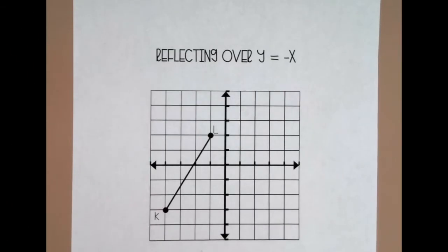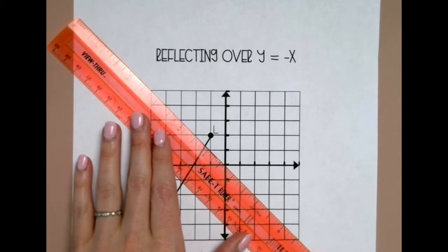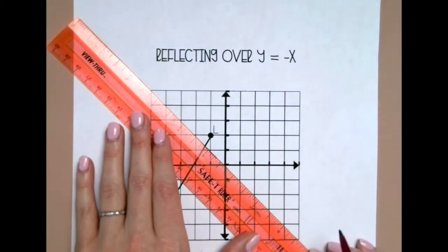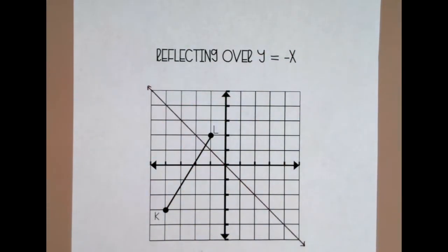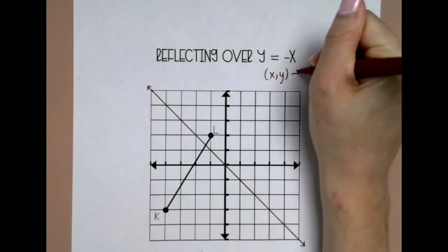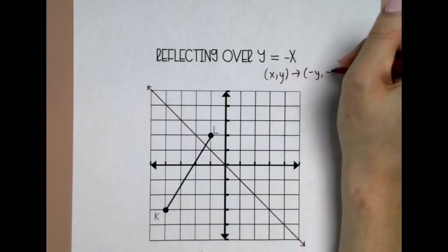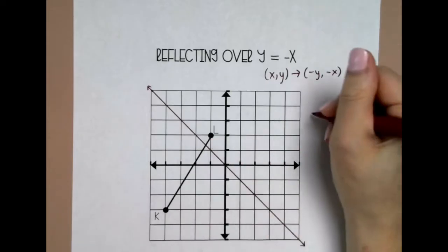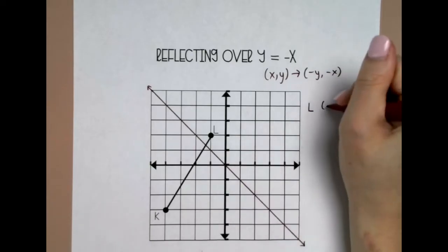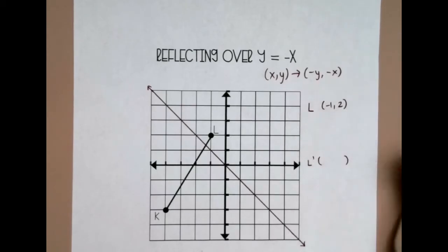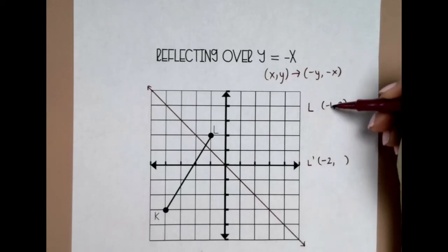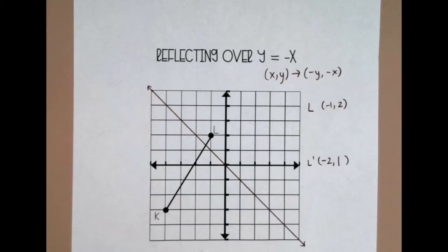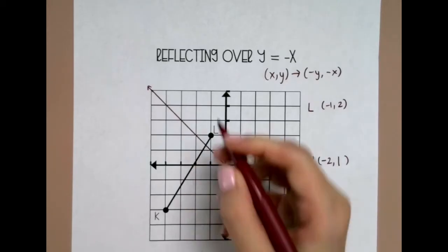This is another example of a diagonal line of reflection: y equals negative x. Remember it has a negative 1 slope, that means it's going to fall from left to right, going through the origin. This one is a little bit different because the line of reflection actually goes through my figure. The coordinate rule for y equals negative x is negative y, negative x. So I'm going to do that for L. Right now L is at negative 1, 2. That means L prime: I write my y coordinate first but change the sign, then I write my x coordinate and change the sign, so positive 1. So L prime is going to be negative 2, positive 1.